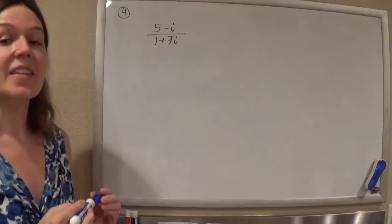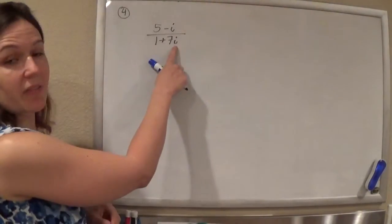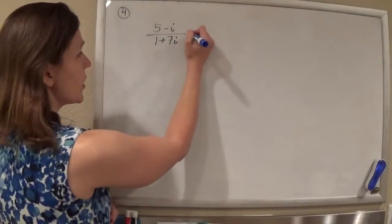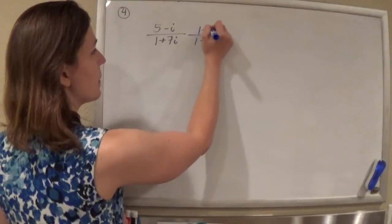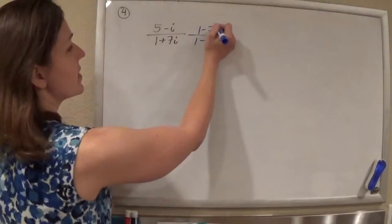Okay, so we want to get this in standard form, which means getting rid of the i in the denominator. So if we multiply by the conjugate, 1 minus 7i, gorgeous things will happen.